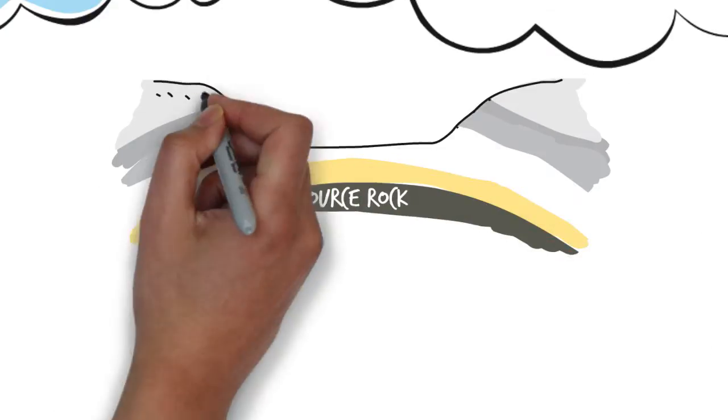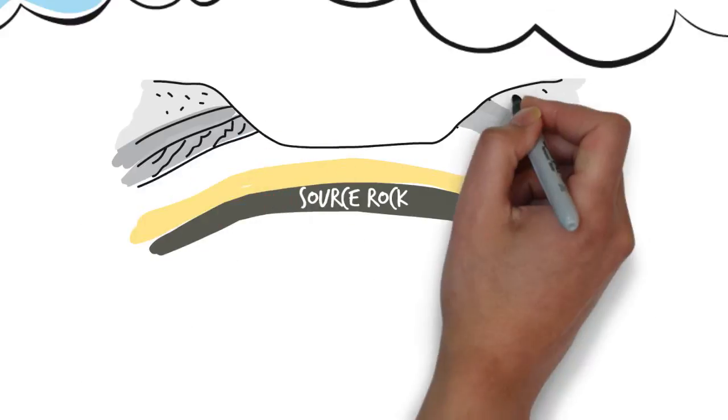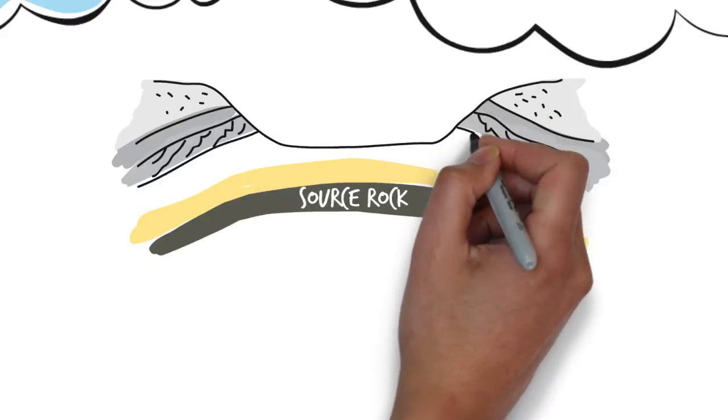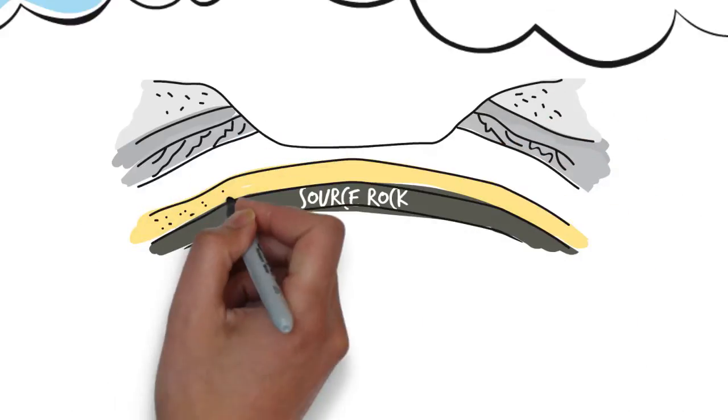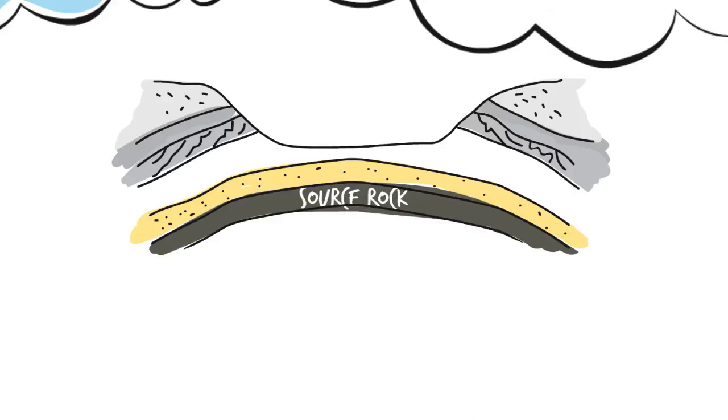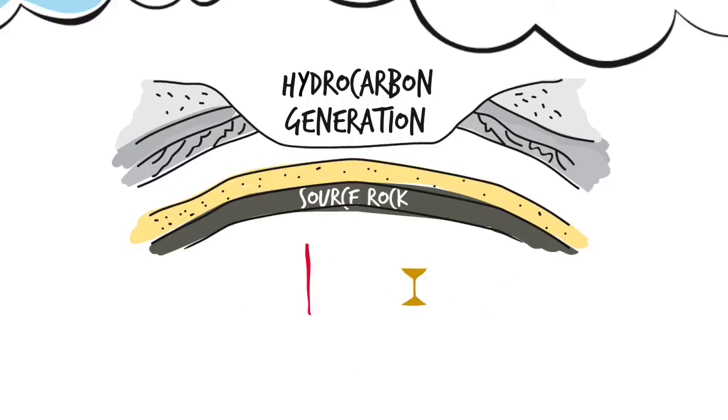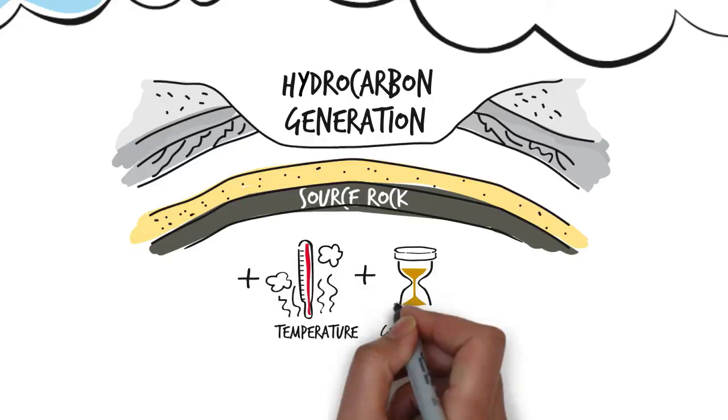But how does the source rock generate hydrocarbons? And why do hydrocarbons flow through the subsurface? To produce hydrocarbons, the source rock requires high temperatures and long periods in terms of geological time. In other words, millions of years.